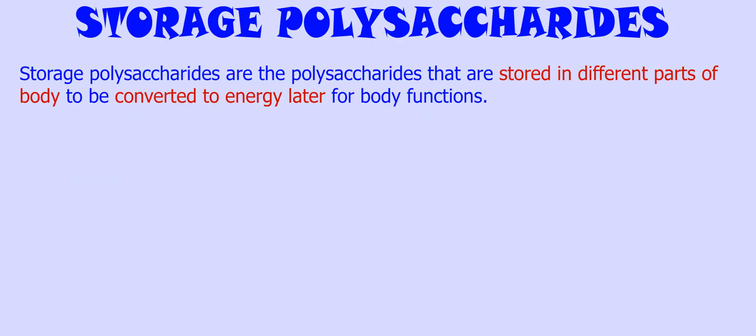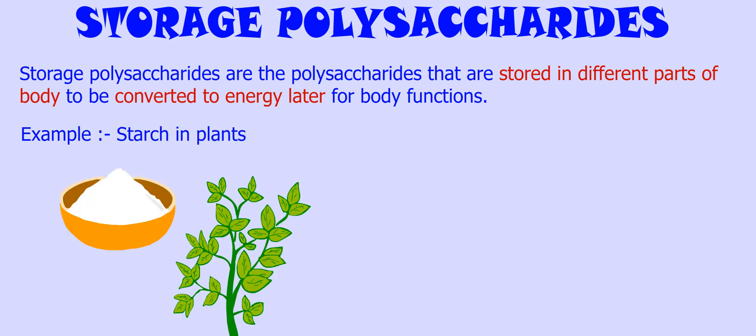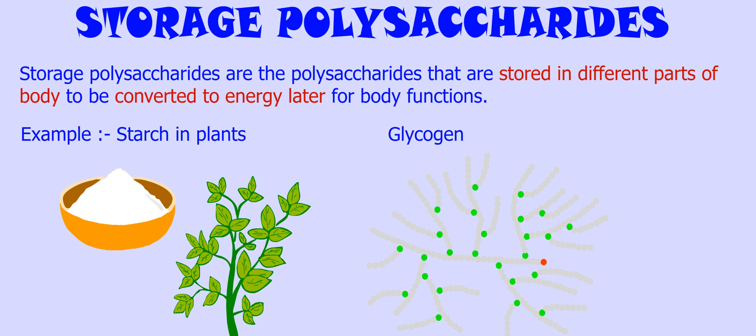Functions of polysaccharides: Storage polysaccharides are stored in different parts of the body to be converted to energy later for body functions. Examples include starch, in plants, and glycogen, in animals.